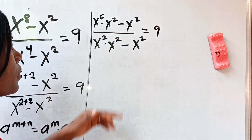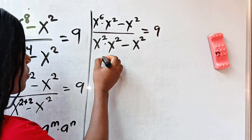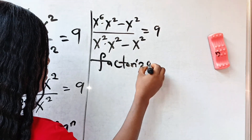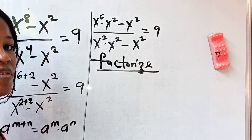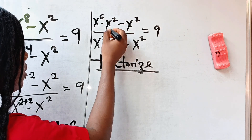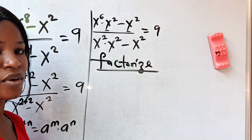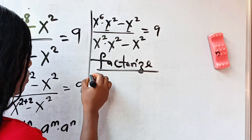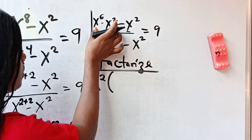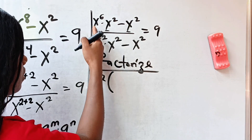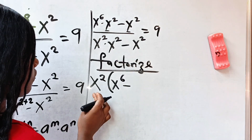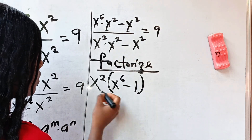Now let's factorize. If we factorize, we'll bring out x to the power of 2 since that is what they have in common. So we have x squared bracket — when the numerator is divided by x squared, x to the power of 6 will remain. Minus, when x squared is divided by x squared, 1 will remain.